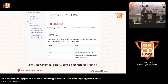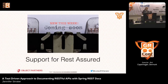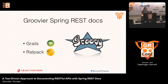That was the first release of Spring REST Docs — very promising to see what it was doing. But Mock MVC doesn't work for everything. It didn't work for Grails or Rat Pack or other things where you don't want to add all the Spring stuff. What was released just this week is the support for REST Assured. With REST Assured, we can add support for other things such as Grails and Rat Pack.